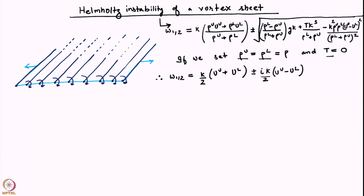If you substitute these simplifications into the full dispersion relation, it simplifies considerably. Note that setting rho_u equal to rho_l eliminates the gravity term. There is no surface tension, and consequently what is inside the square root is always negative. The first two terms inside the square root are zero, and the third term is always negative because there is a negative factor outside and a negative sign multiplies a square.